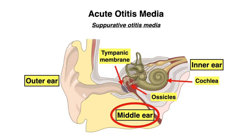So when should we consider otitis media? Patients can present with a wide variety of symptoms, and it also depends on their age. Fever can be possible as well as ear pain, which is the most common complaint. In pediatric patients, look out for other symptoms like ear tugging or rubbing, as well as nonspecific symptoms like irritability, fussiness, or changes in feeding.